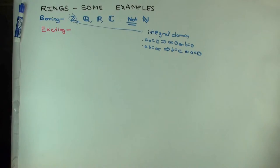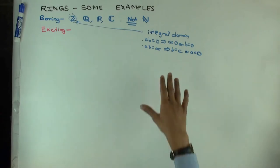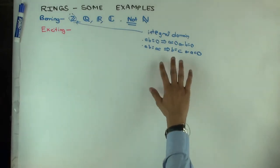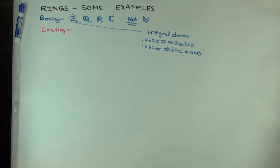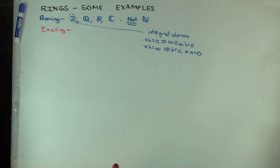The integers form an integral domain. Actually, that's where the word integral domain came in — it's something which behaves like the integers. Although you can cancel stuff, you cannot invert stuff within the integers. However, if you start trying to introduce inverses to things in the integers, what do you get? Rational numbers.